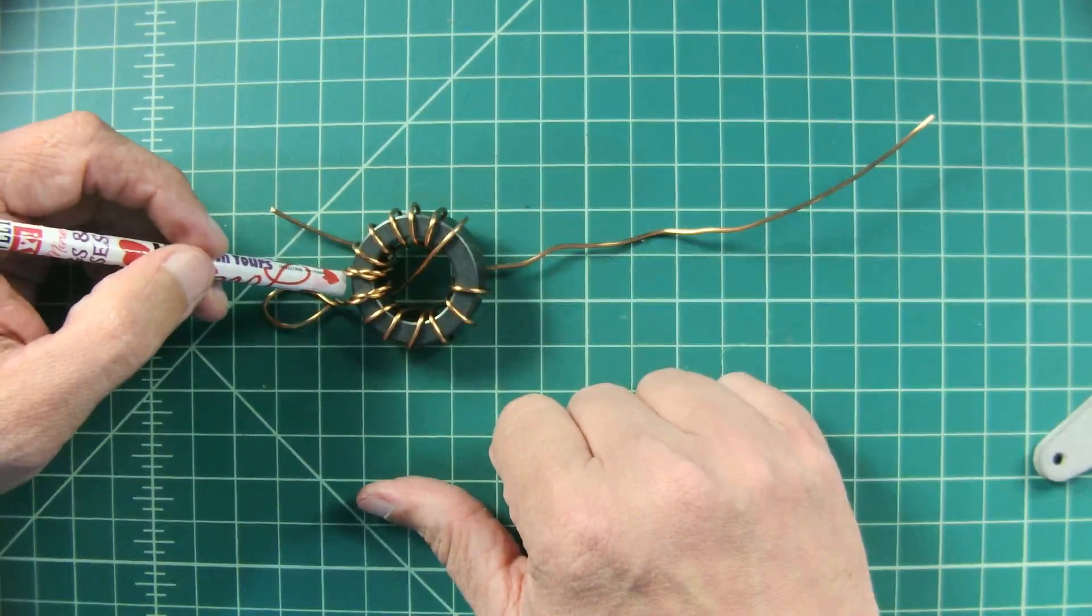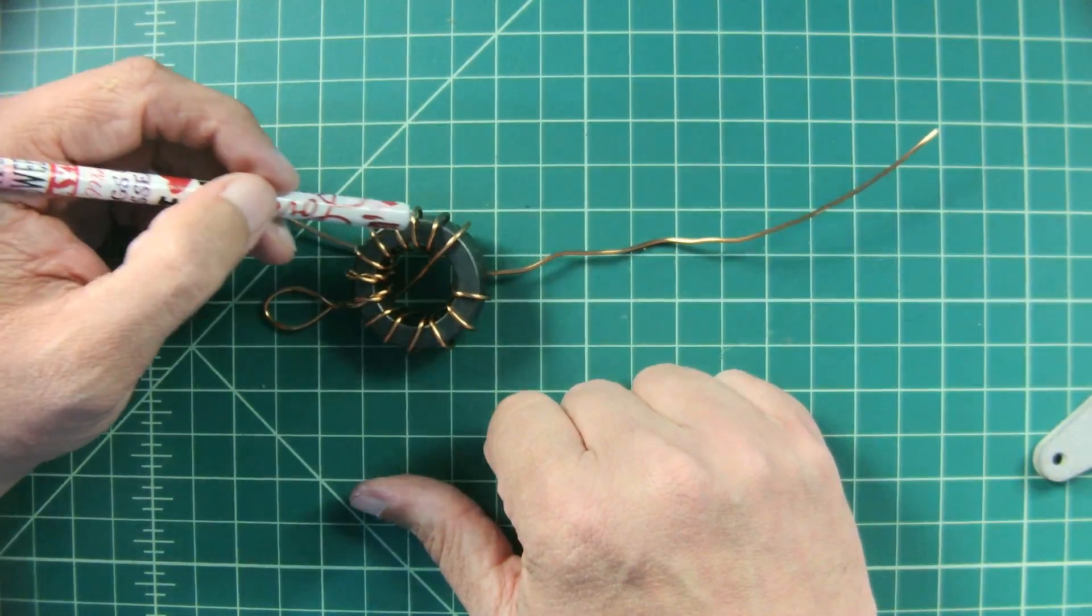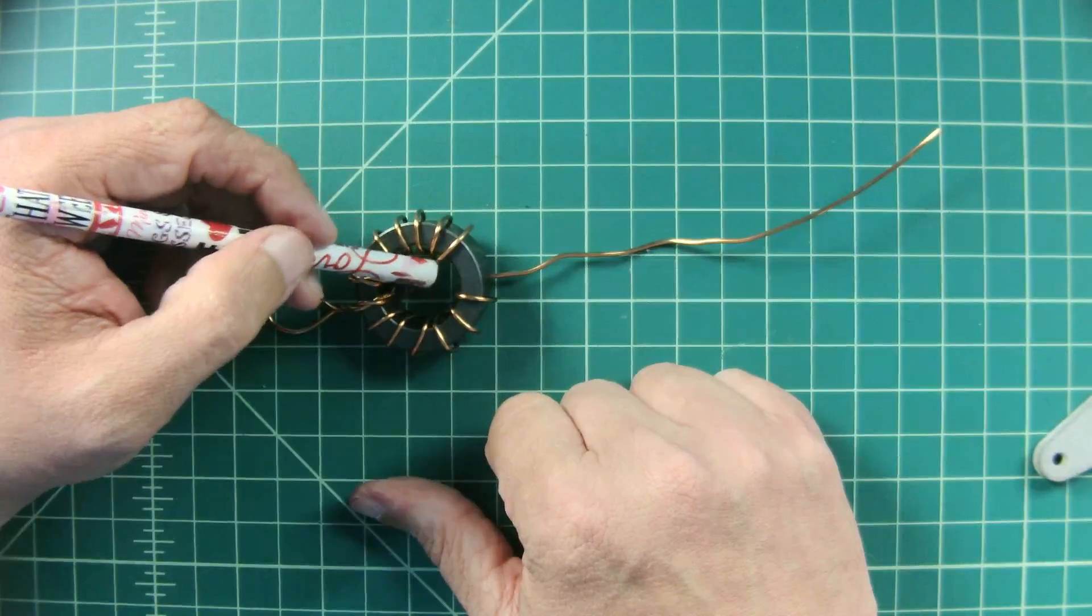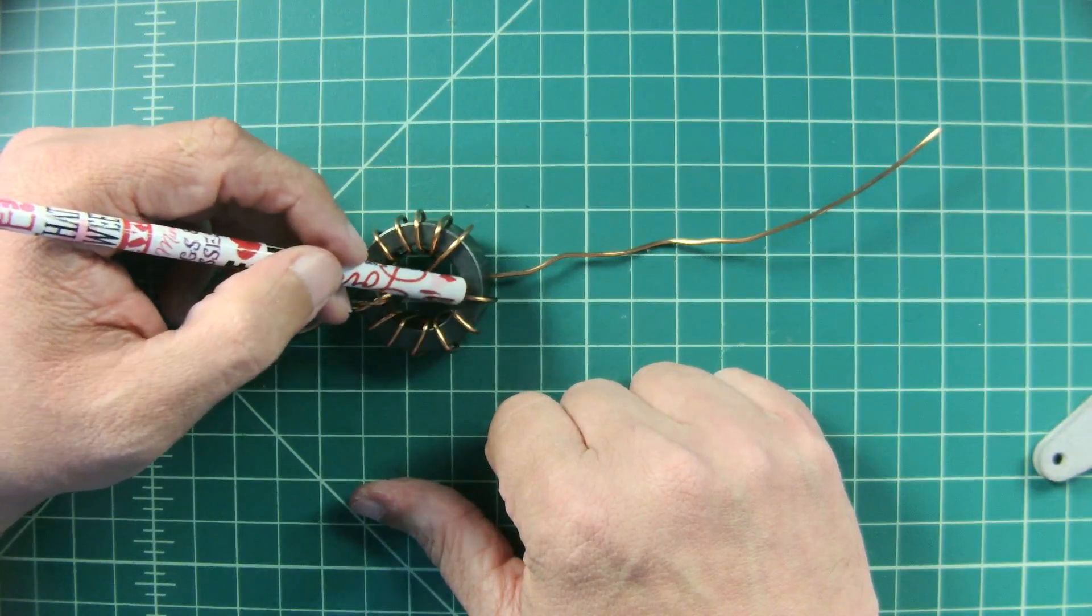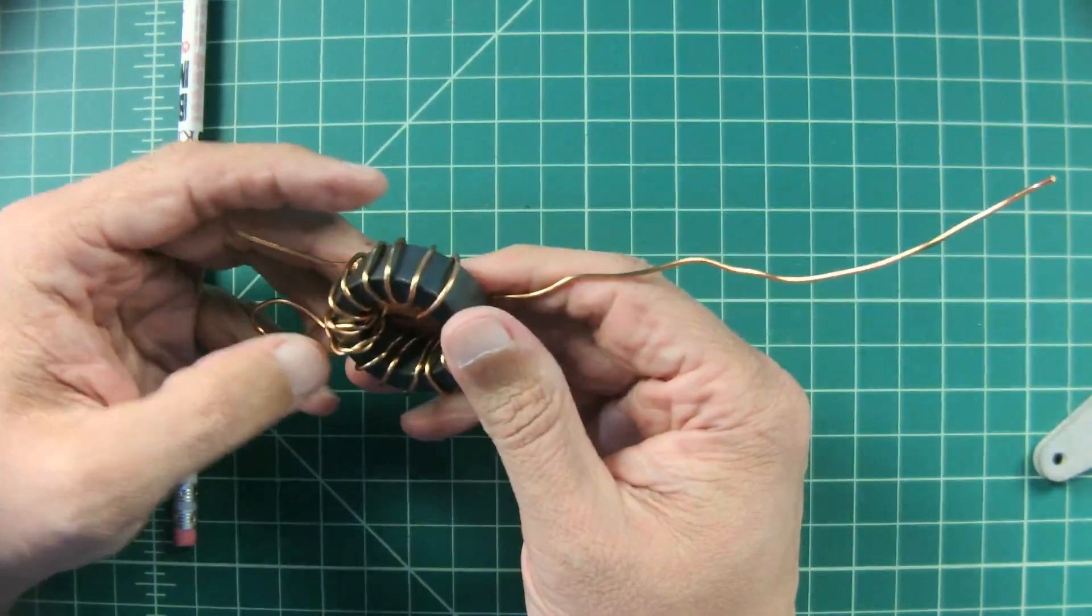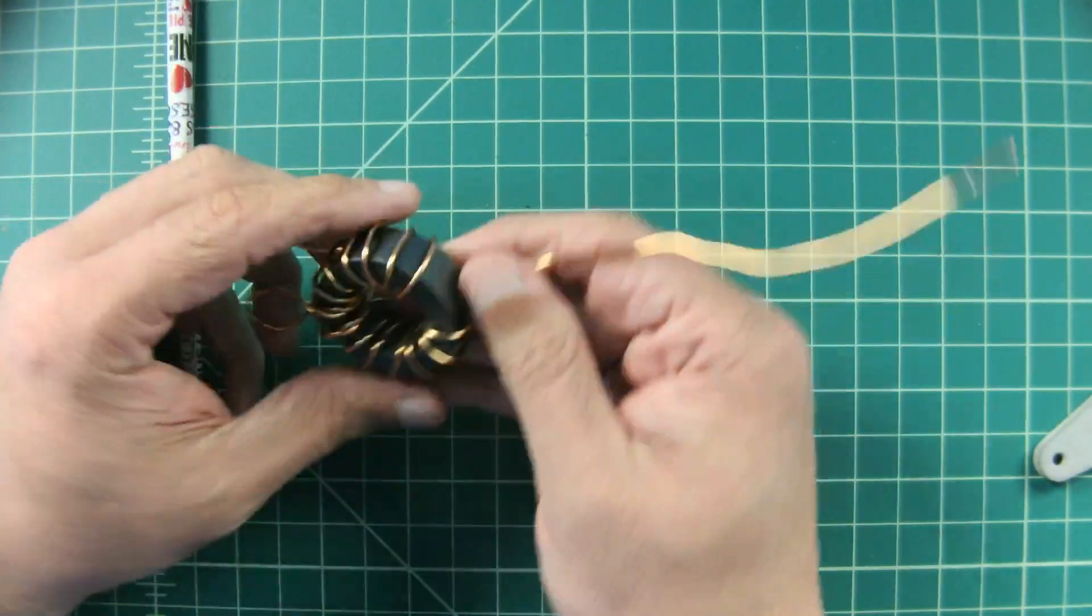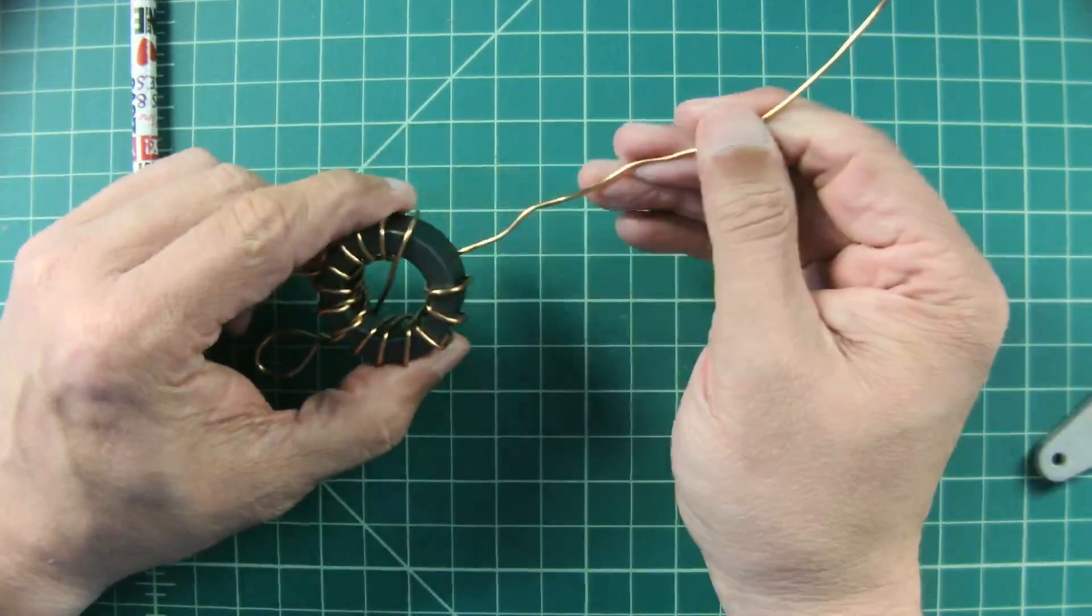So we have our two primary turns and then I have one, two, three, four, five, six on the crossover, seven, eight, nine, ten, eleven, twelve for a total of 14 turns.